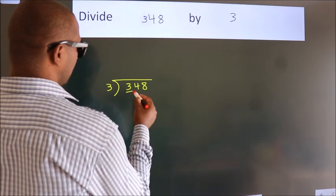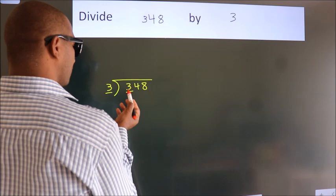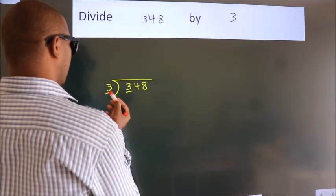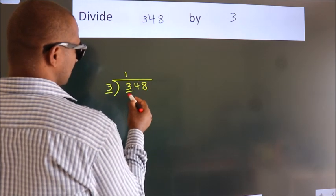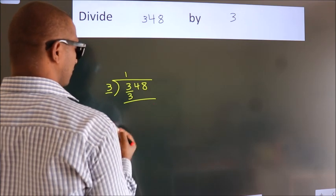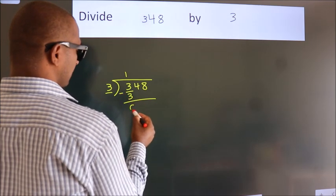Next, here we have 3, here 3. When do we get 3? In the 3 table, 3 once is 3. Now we subtract and we get 0.